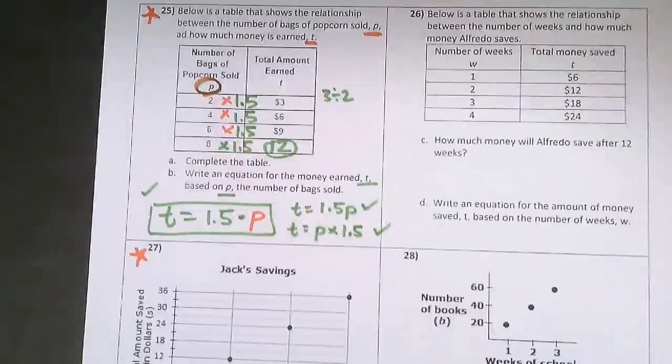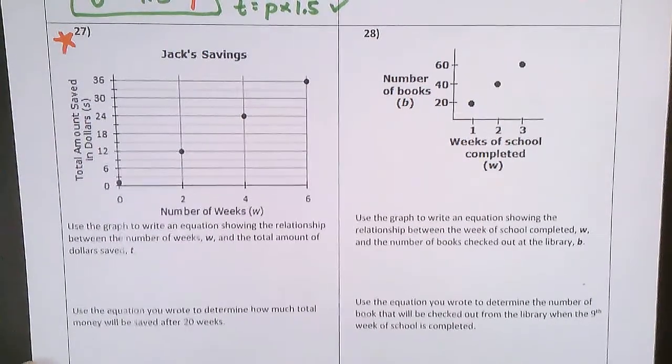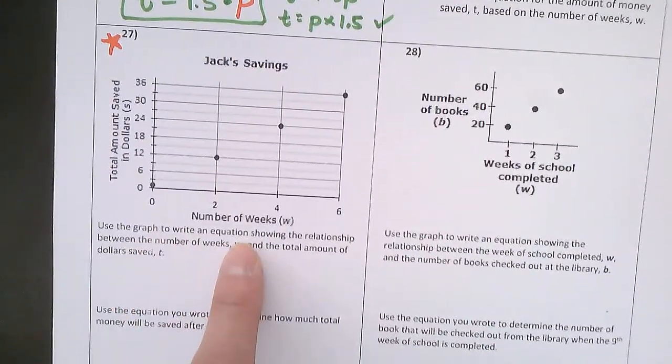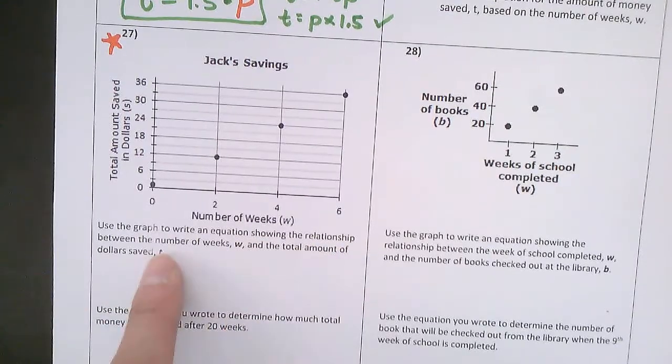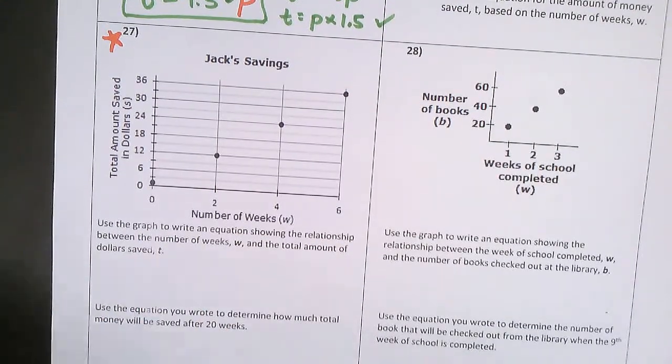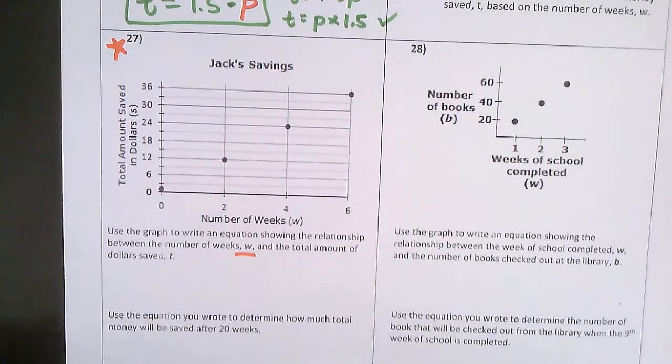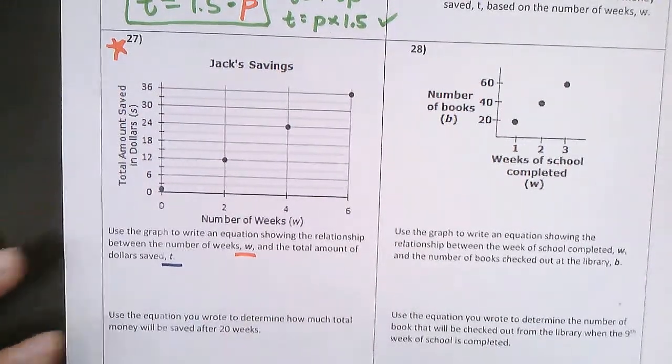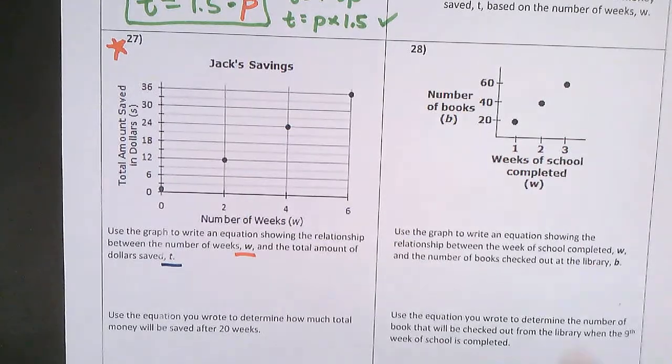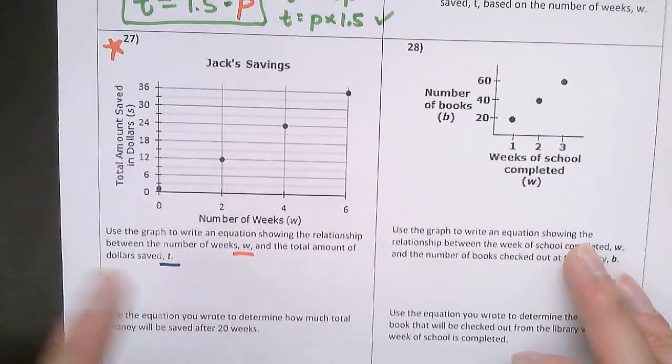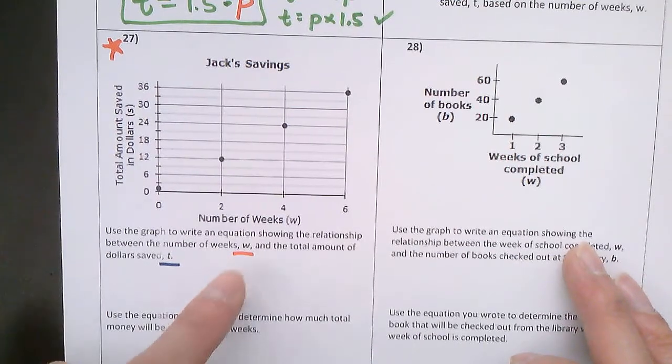Okay, last one. Number 27. Use the graph to write an equation showing the relationship between the number of weeks, which is W, and the total number of dollars saved, which is T. So I'm comparing weeks and dollars saved. I want to look at the graph. What is the relationship between W and T?